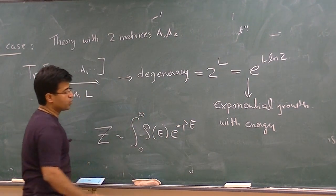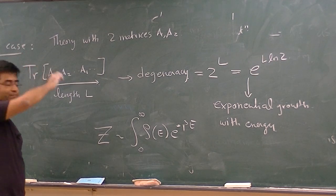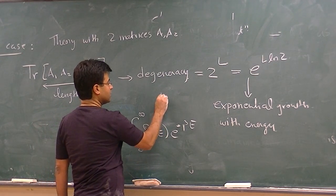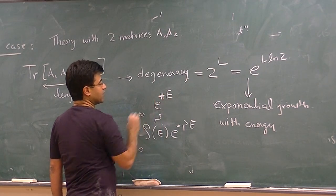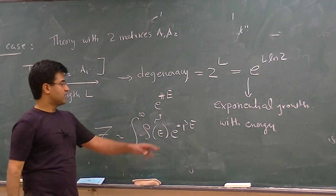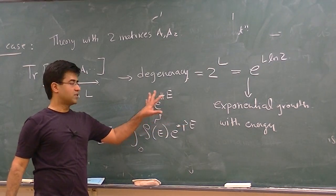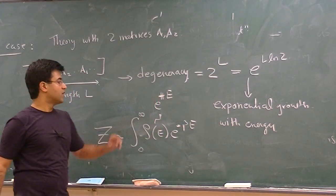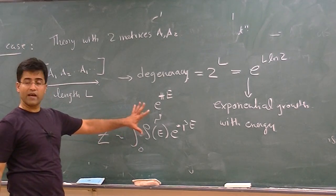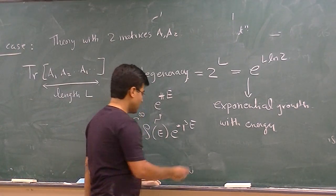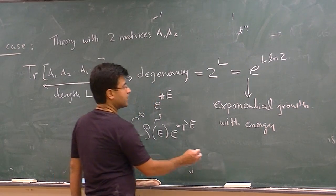So if rho grows exponentially with energy, if this grows like e to some number times energy, it's clear that beyond some critical temperature, this is going to blow up. So there is a critical temperature and that is actually the Hagedorn temperature. So this is Hagedorn growth of states.